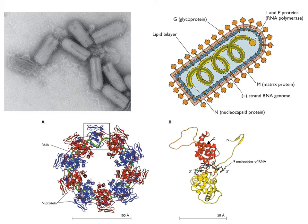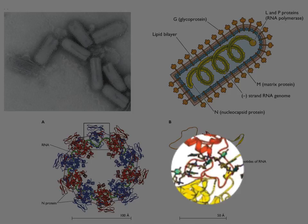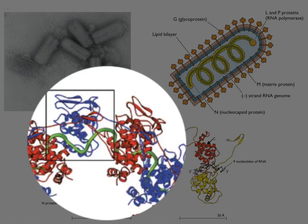The protein that makes up the subunit of this nucleocapsid is called the N, or nucleocapsid, protein. Here is the X-ray structure of the protein bound to a short RNA of nine nucleotides — the RNA interaction is not sequence-specific, which is why these proteins can coat the entire genome. When you put multiple N-protein molecules together, they begin to form a helical structure, with each N-protein binding an adjacent part of the RNA. That's how these nucleocapsids form.